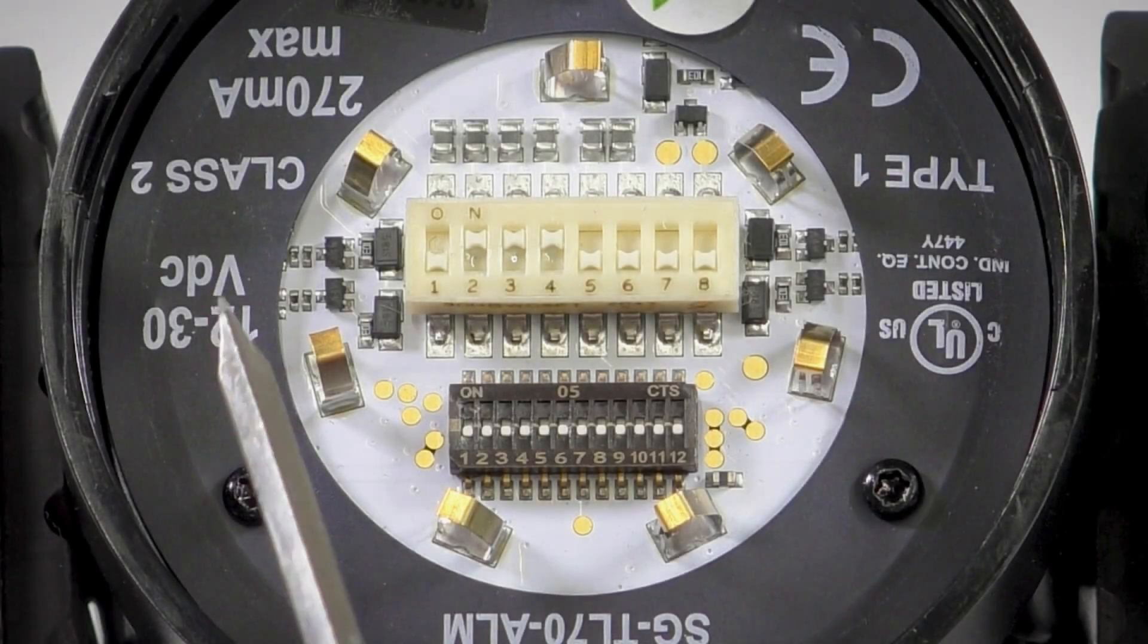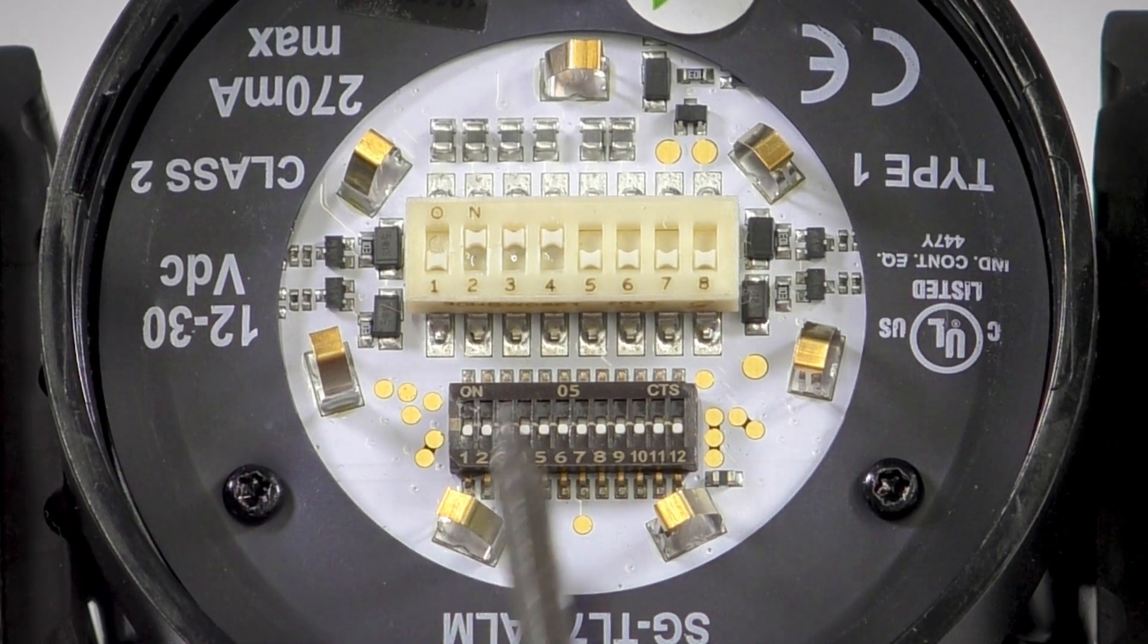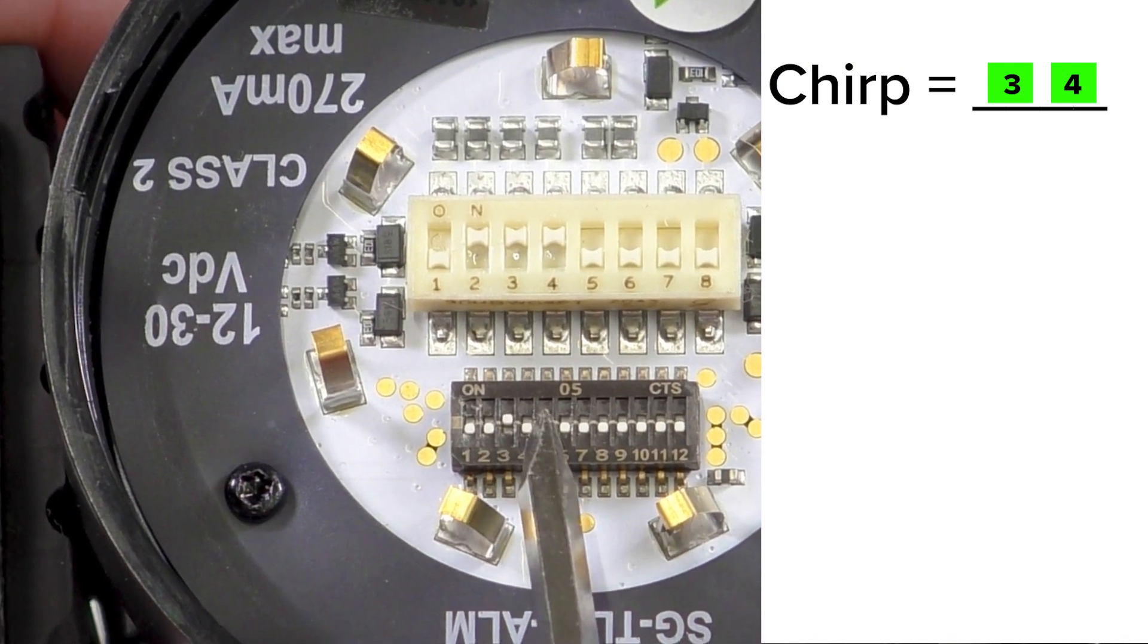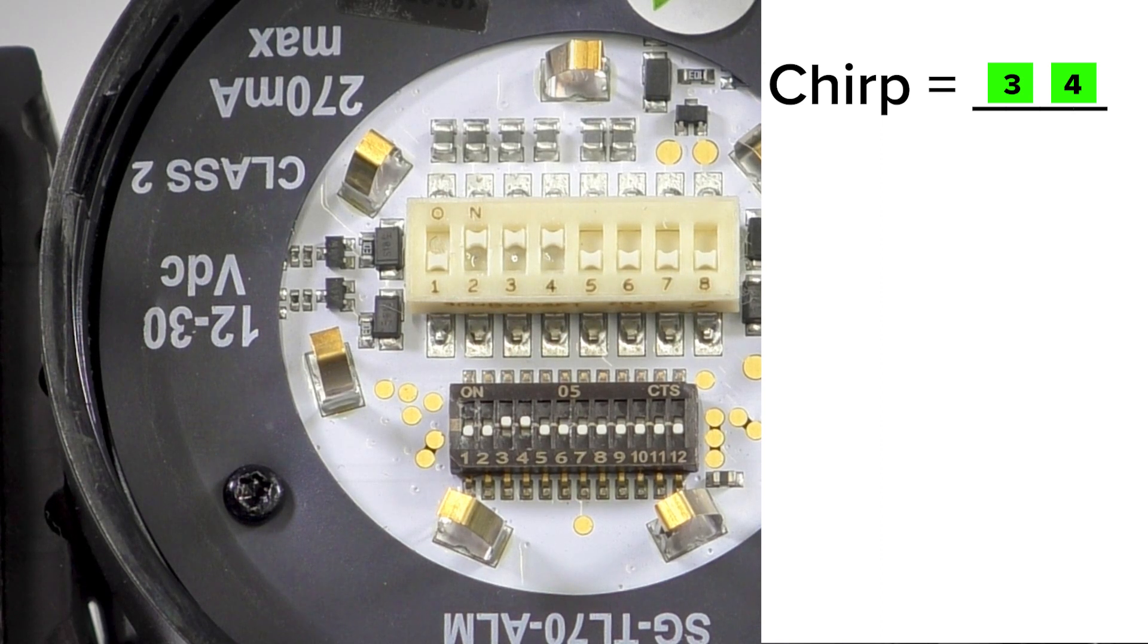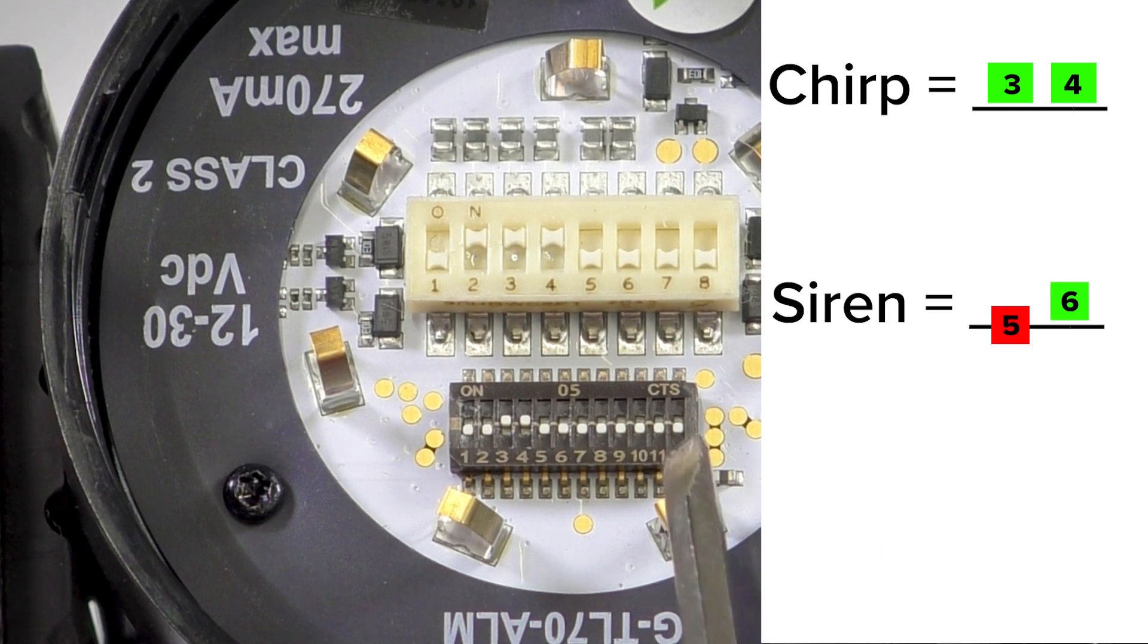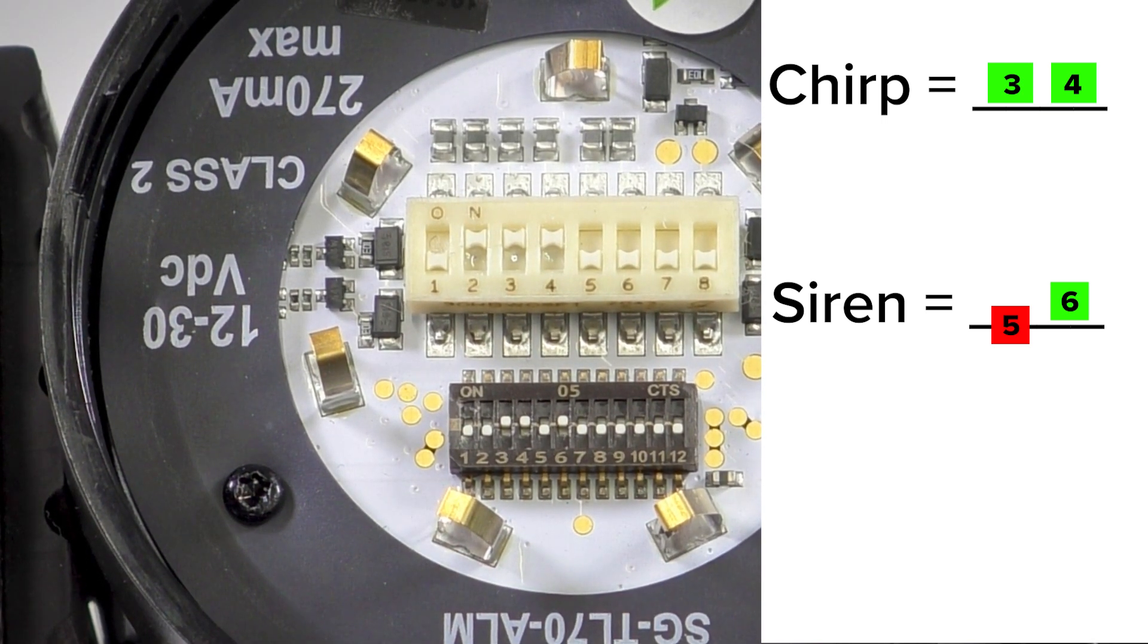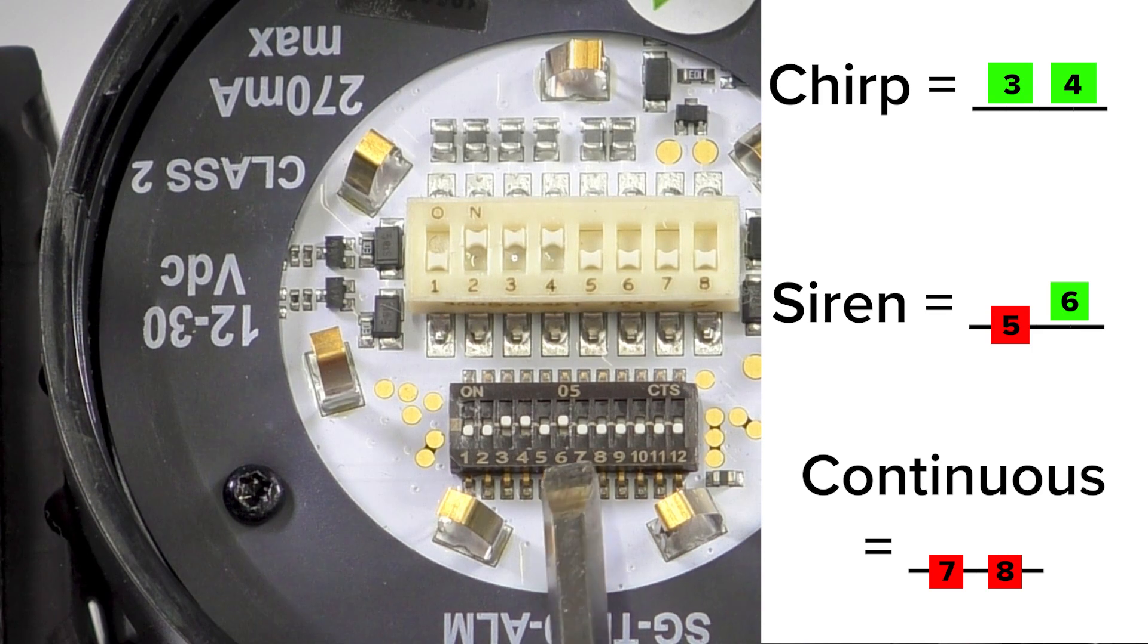For input number two, we can choose a chirp alarm. In that case, we will turn switches three and four both on. Switches five and six for input three we can turn to a siren. This corresponds to five off and six on. And for our fourth input, we will stay with the default continuous alarm setting, meaning we leave switches seven and eight in the off position.